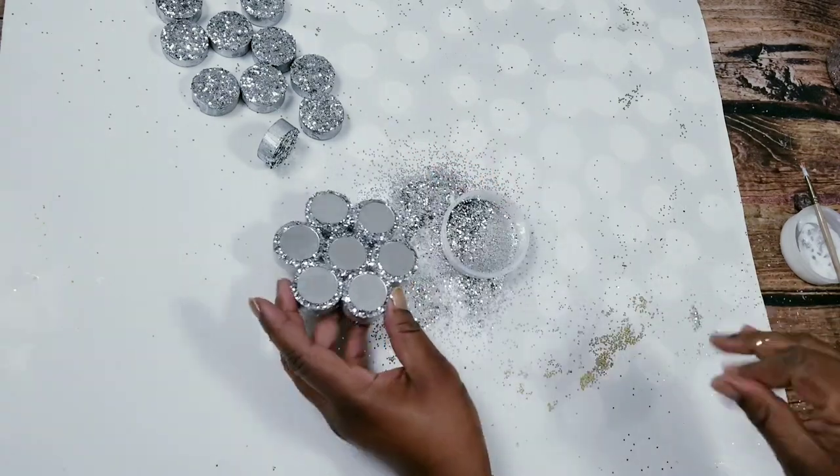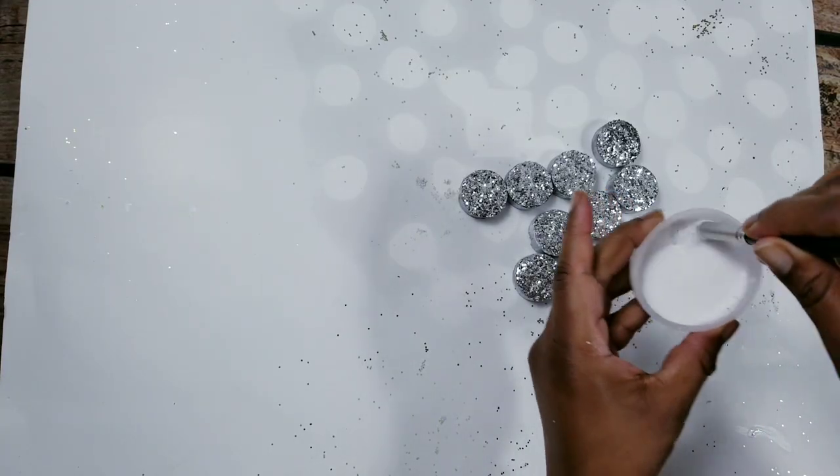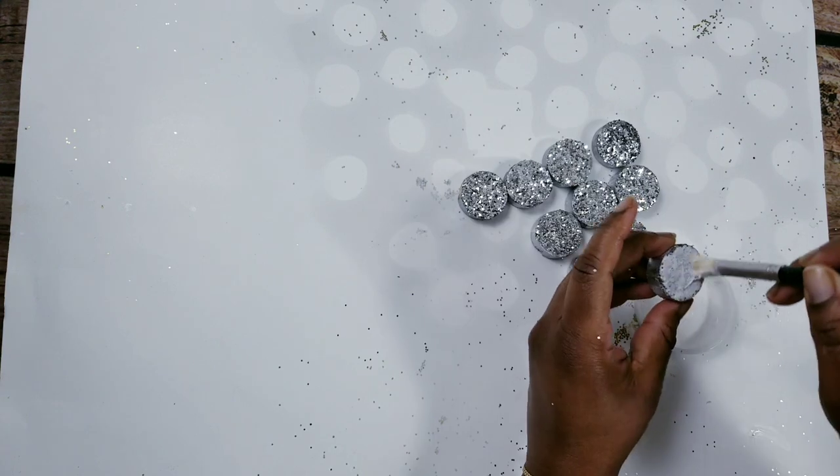And to seal everything in and stop my glitter from shedding, I'll just water down some Mod Podge and layer it over the glitter.